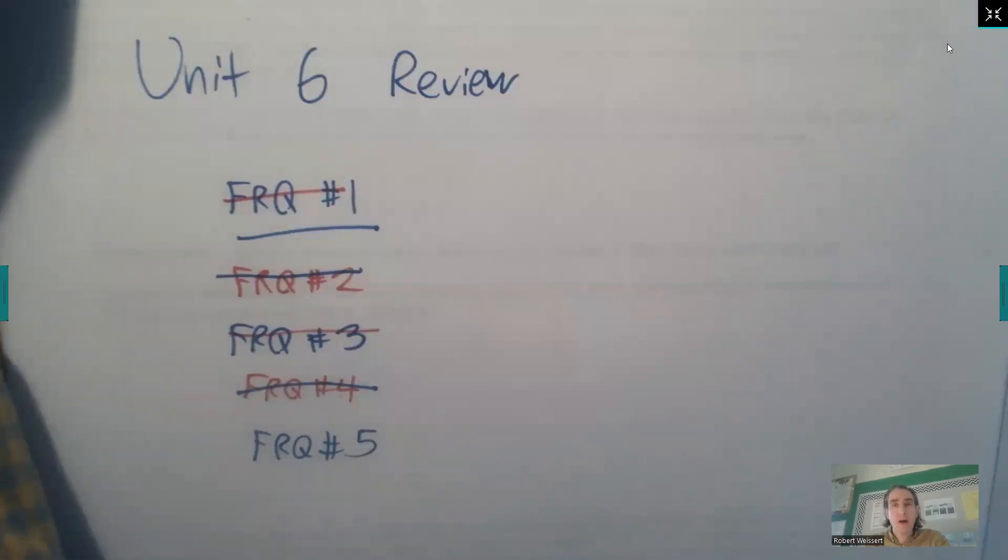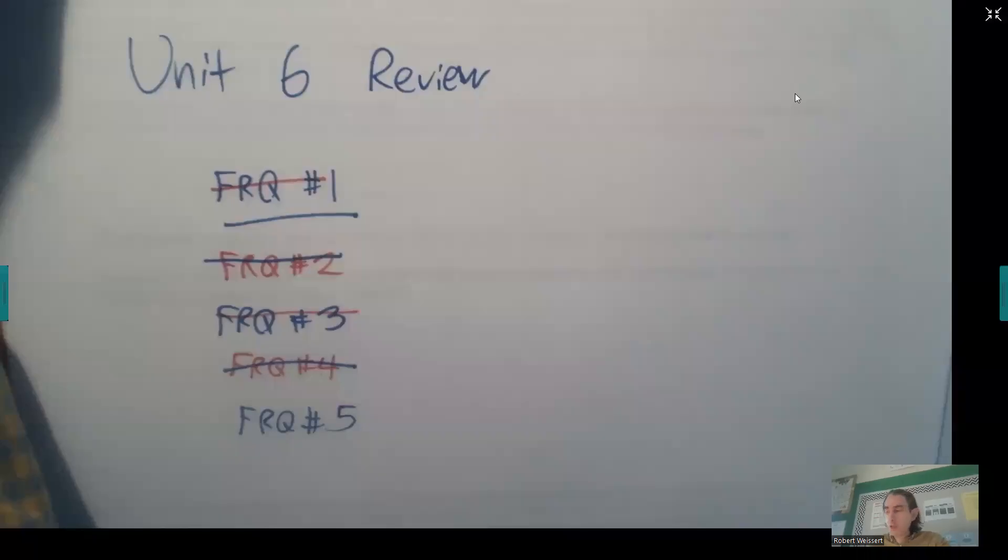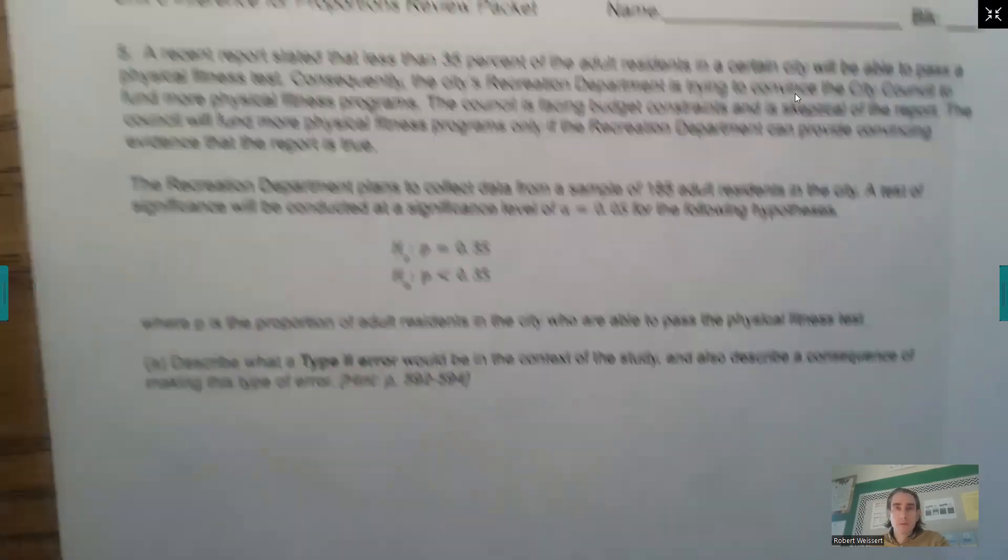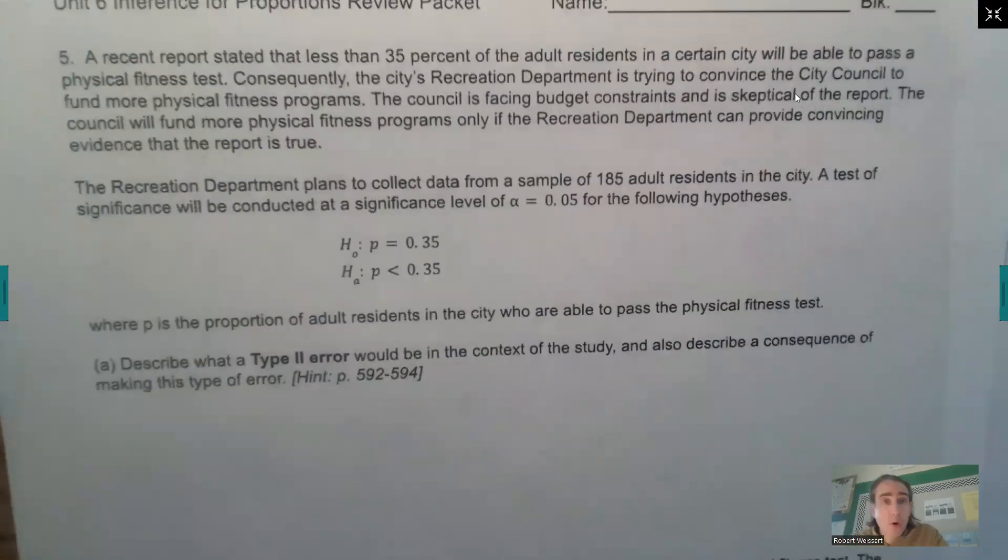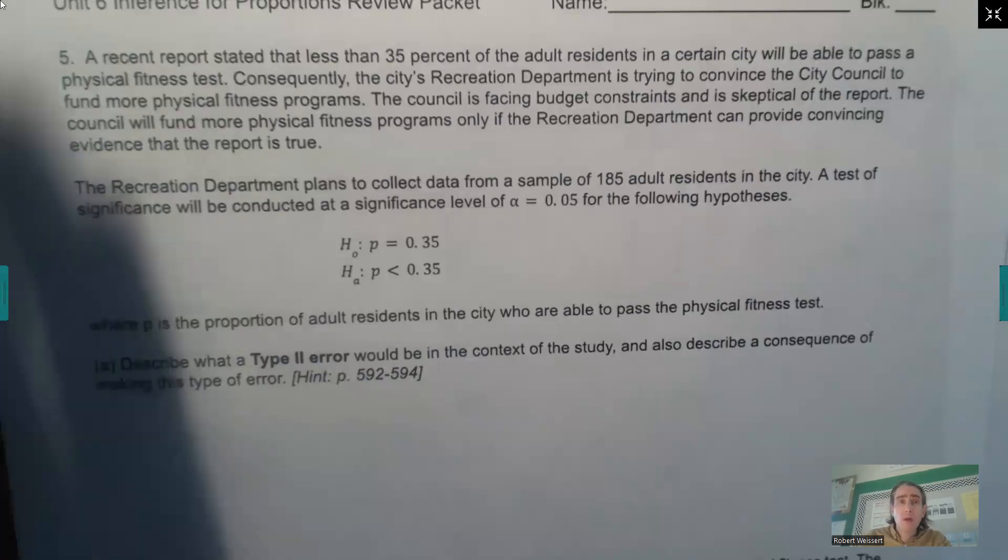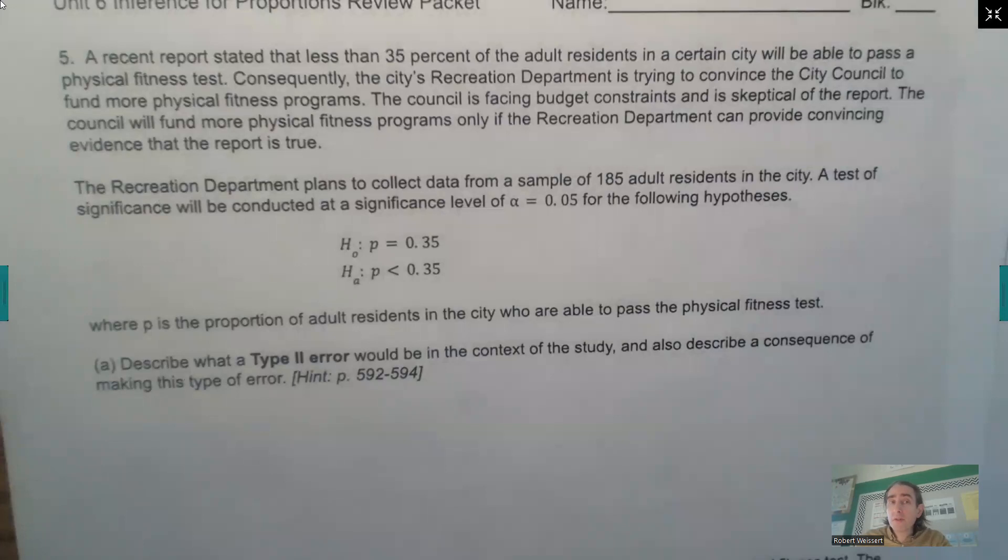Free response question number 5. Here is the question. A recent report stated that less than 35% of the adult residents in a certain city will be able to pass a physical fitness test. Consequently, the City's Recreation Department is trying to convince the City Council to fund more fitness programs. The Council is facing budget constraints and is skeptical of the report. The Council will fund more physical fitness programs only if the Recreation Department can provide convincing evidence that the report is true.